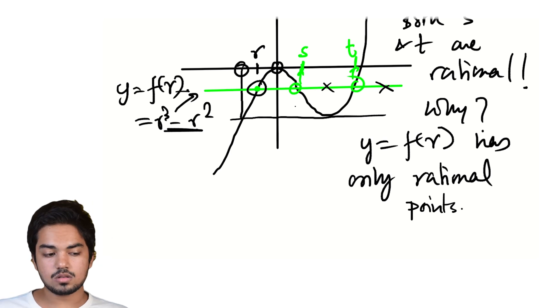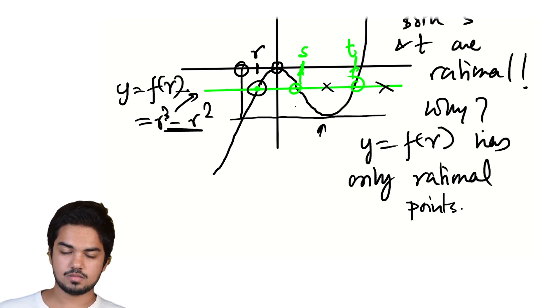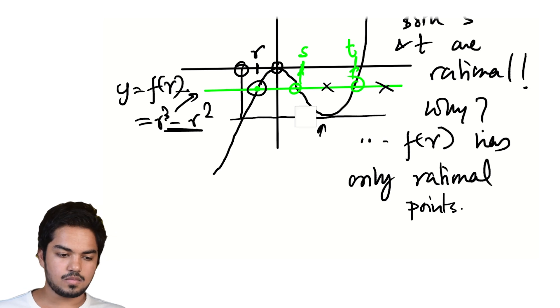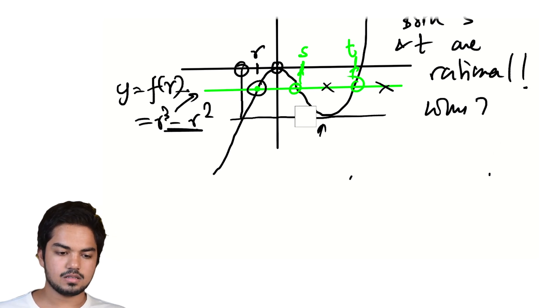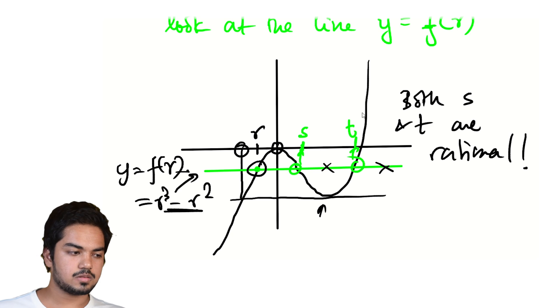Y = f(R) has only rational points. And the intersection with the graph of Y = x³ - x², that's a rational equation. That's more reason. And so S and T are rational. And that's why